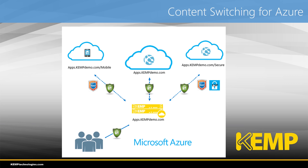First, let's look at a typical content switching requirement in Azure, where the Loadmaster presents a single URL to users and aggregates a number of application services running in the cloud. These could even be running in different Azure regions. Note that the mobile app is protected by Kemp's web application firewall, and the secure version is protected not only by WAF but also by Kemp's ESP, the Edge Security Pack, which provides authentication.